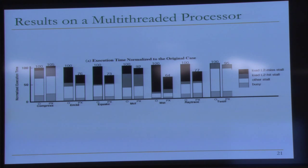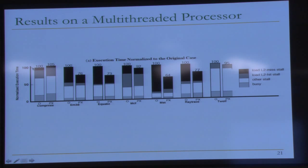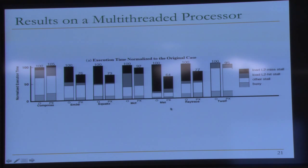The results show significant gains: this is the execution time, with the left bar showing the baseline and the right showing execution time with this prefetching. While it doesn't work well for all workloads — in one case execution time actually increases — you see significant gains on others. For minimum spanning tree, there is a 36% performance benefit. These are not necessarily the most optimized versions.